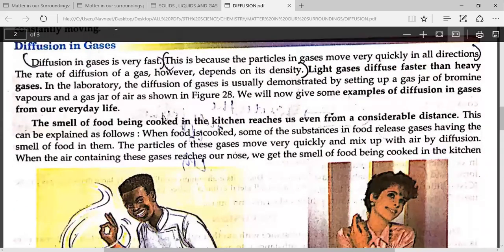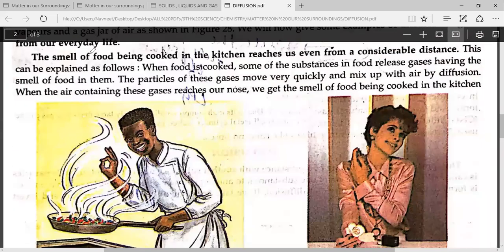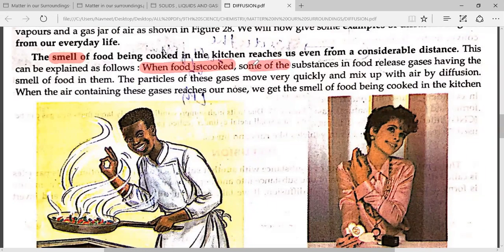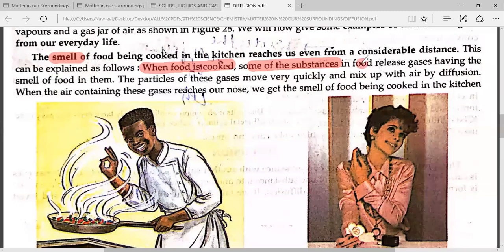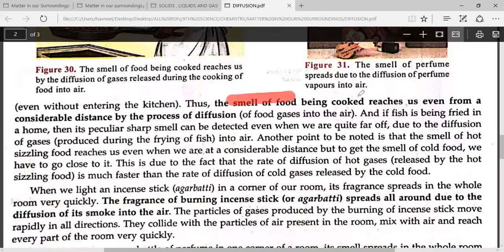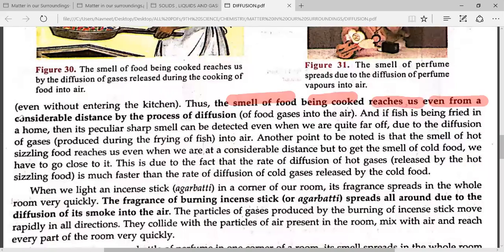Next observation: When there is cooking in the kitchen, the smell reaches quite a distance. What is the reason for smell? When the food is cooked, there will be some gases from it, and the gases will be mixed with air and diffuse. Because of diffusion, the smell of the food reaches us even from a considerable distance.